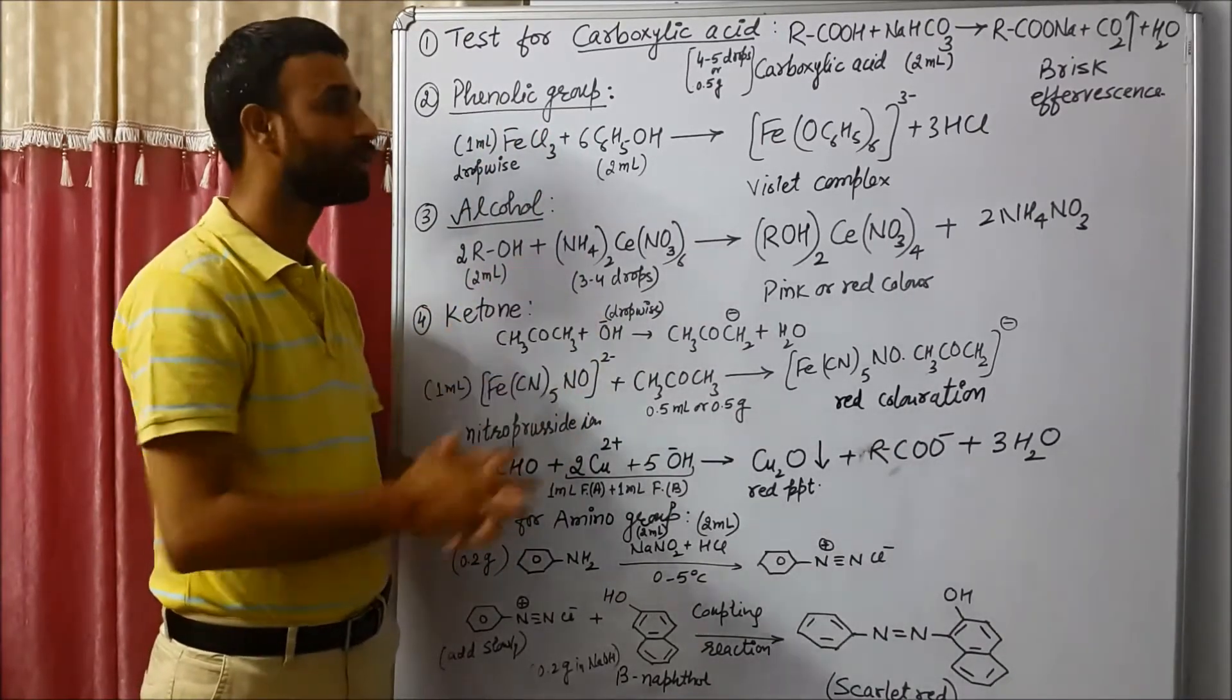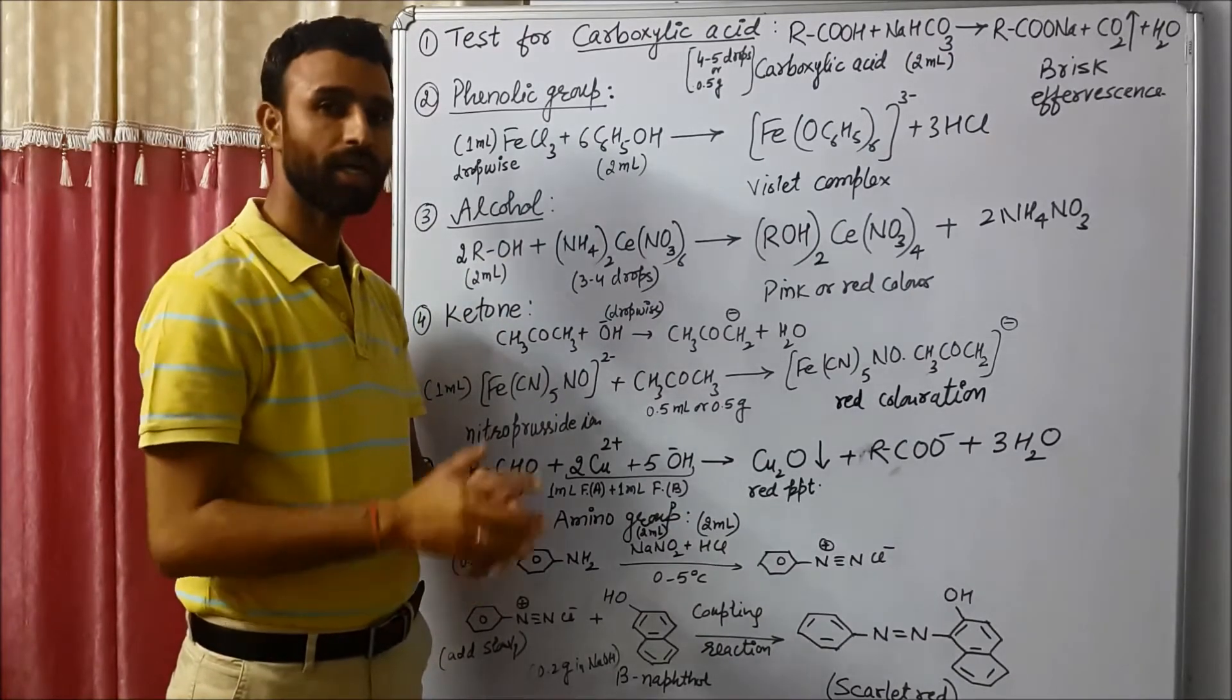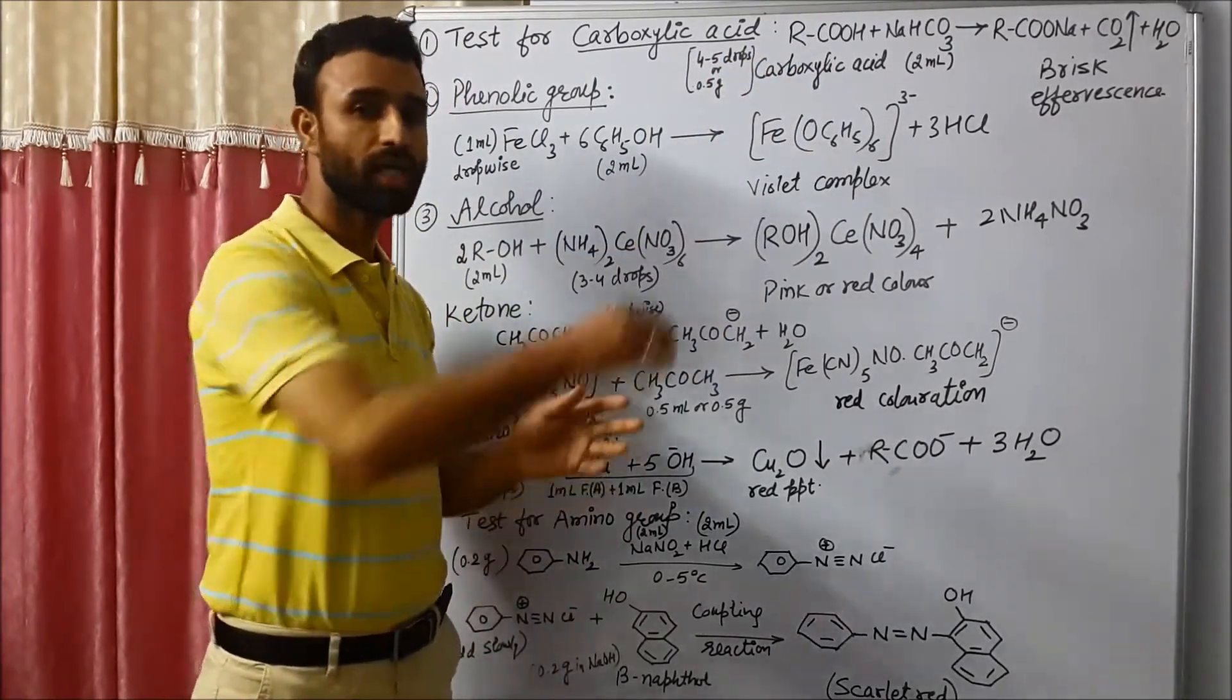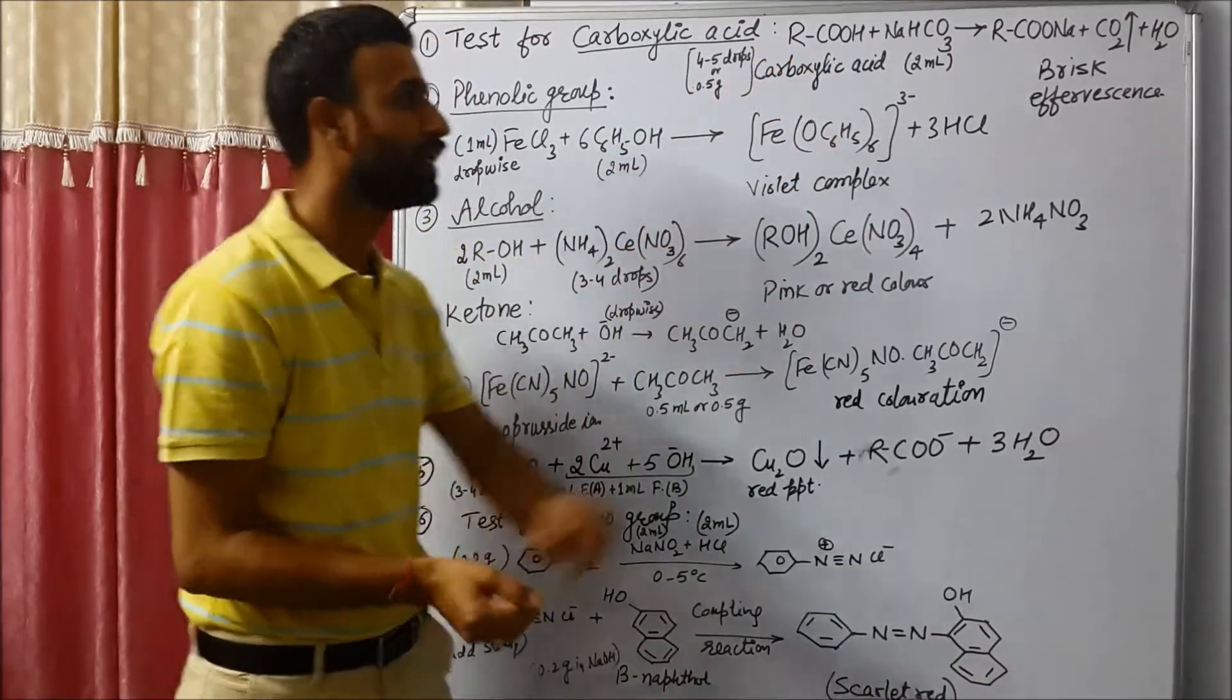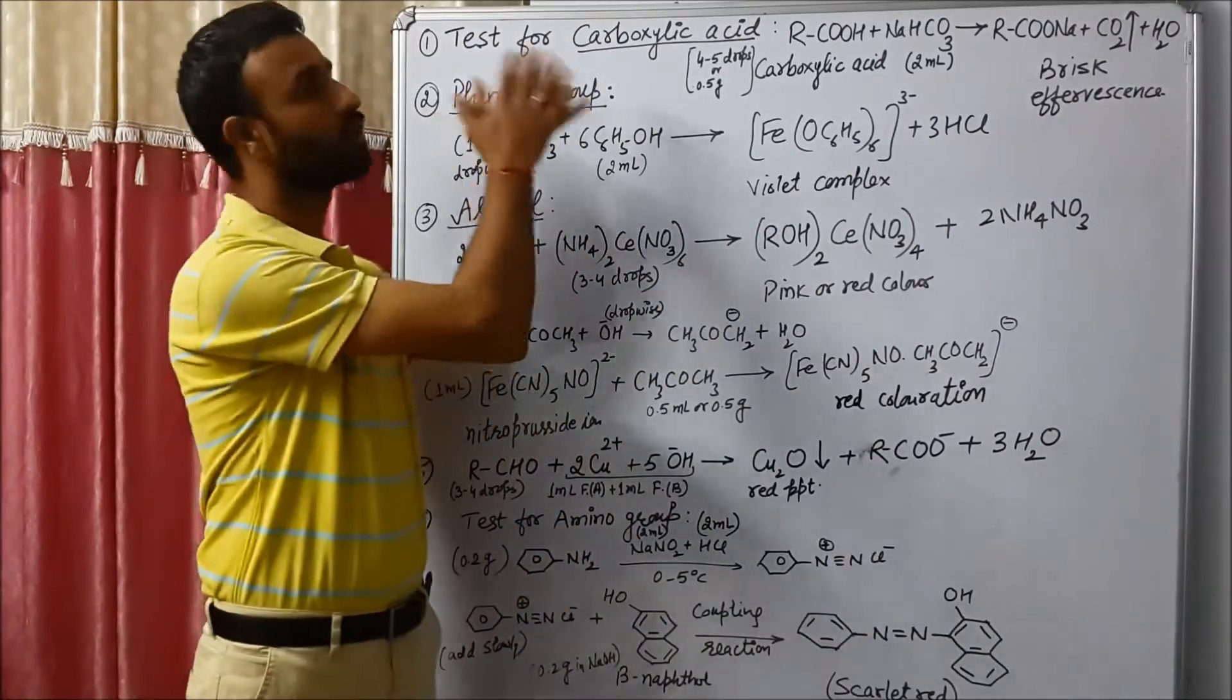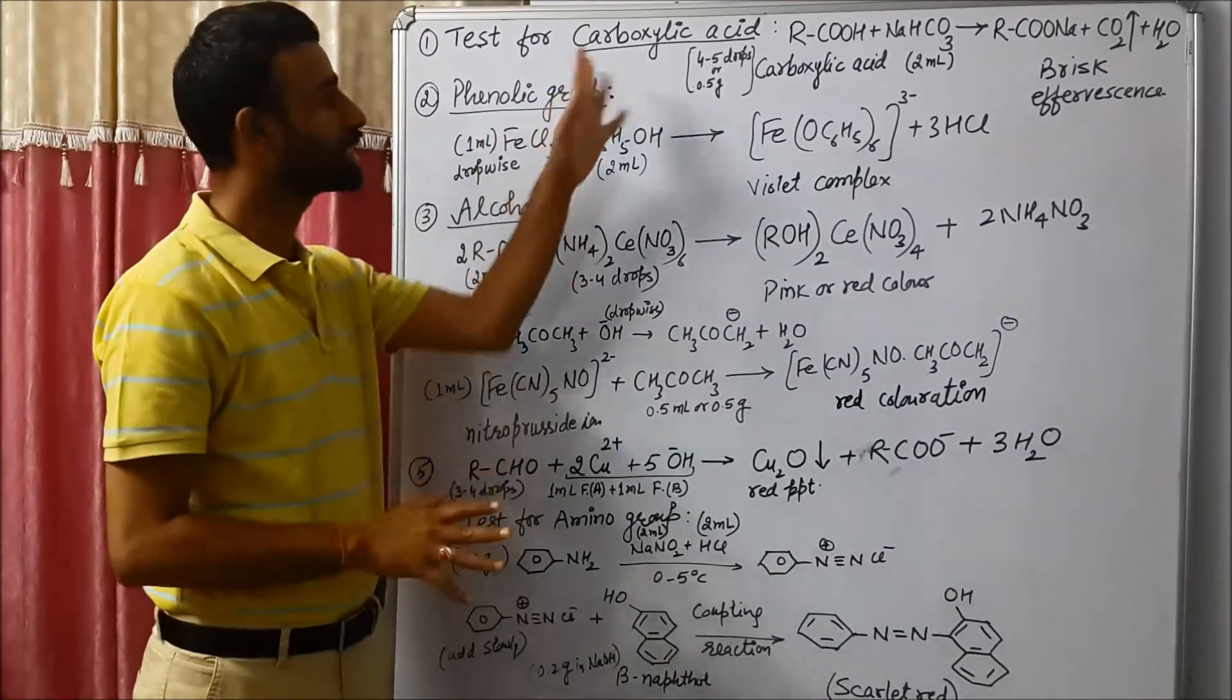So to confirm it, what we do, we take 2 ml of sodium hydrogen carbonate aqueous solution and in that we add 4 to 5 drops of carboxylic acid. So as we add the carboxylic acid drop-wise, we see, if we see this brisk effervescence, that is due to the evolution of carbon dioxide. That means our carboxylic acid is present. So this is first test.